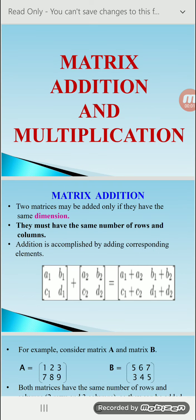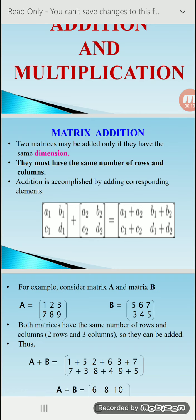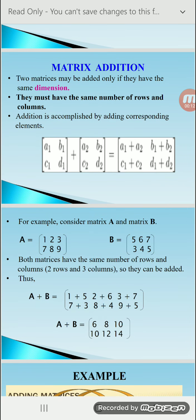Dear students, today I am going to discuss the topic addition and multiplication of matrices. First we start with the addition of matrices. Two matrices may be added only if they have the same dimension — they must have the same number of rows and the same number of columns. That means the condition for addition of matrices is same number of rows and same number of columns.